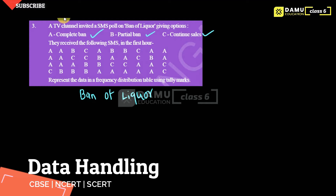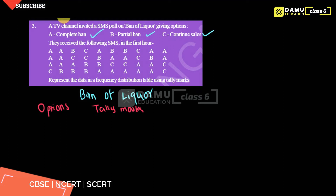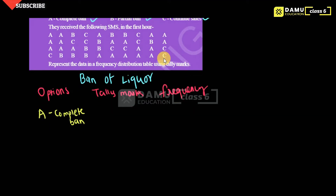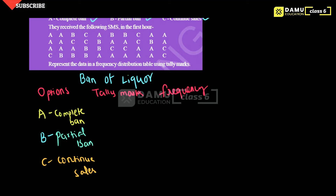So we have to write the options and tally marks, then frequency — meaning the number of times each option gets repeated. Option A is complete ban, option B is partial ban, and option C is continuous sales. Continuous sales means we have to proceed with the sales.